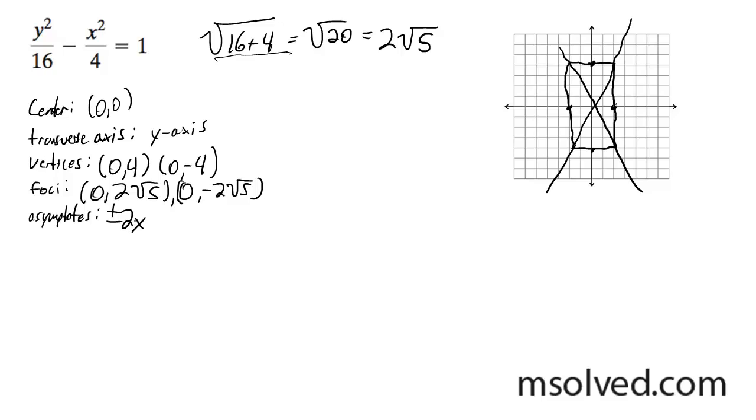And then finally, the asymptotes have a line equation of plus or minus 2x.